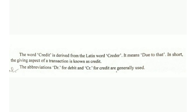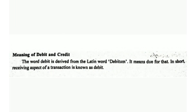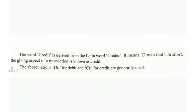In abbreviation, we use DR for debit and CR for credit in the journal. Debit is the receiving aspect of a transaction. Credit is the giving aspect of a transaction.